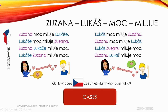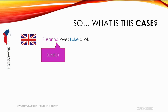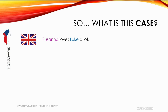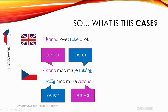I'd like to show you that cases actually exist in English too. 'Susanna dala dárek Lukášovi' — in English, 'Susanna gave a gift to Luke.' To say that Luke is receiving the gift, English uses the preposition 'to.' In Czech, all we need is to add 'ovi' to Lukáš, and we know he is receiving the gift. Another example: 'To je maminčino auto' — 'This is mom's car.' In English, the apostrophe-s shows possession. So in English, you use word order and prepositions to understand who is doing what. The case refers to the function of the noun — meaning who is doing what.